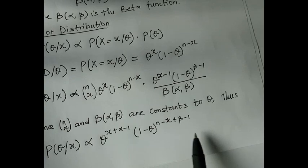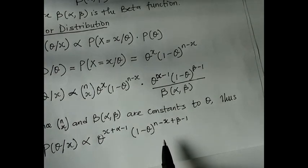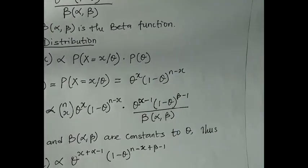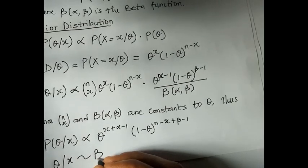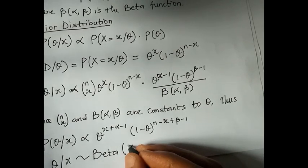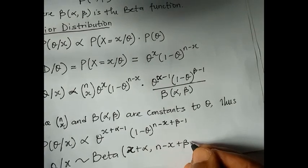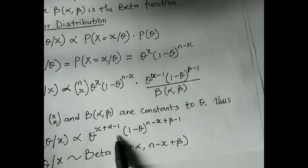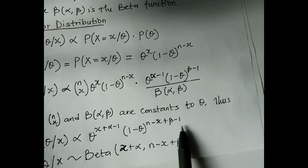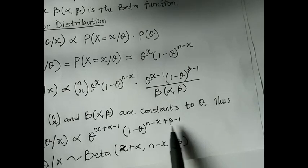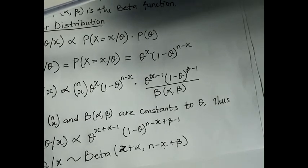This expression is exactly the form of a beta distribution. So the posterior distribution is: theta | x ~ Beta(x + α, n - x + β). The exponents combine — the minus-ones cancel with the plus-ones — leaving us with the parameters x + α and n - x + β for the posterior beta distribution.